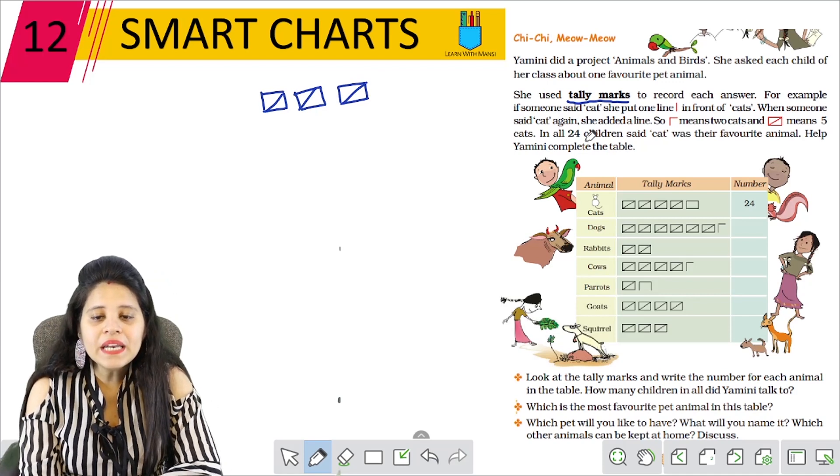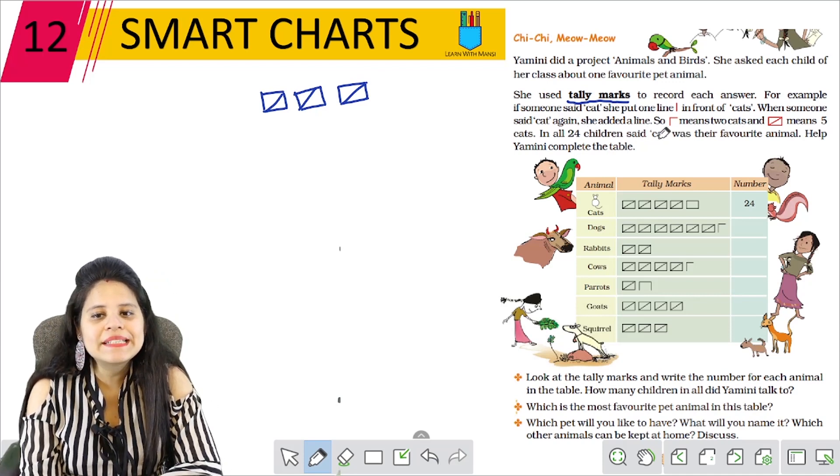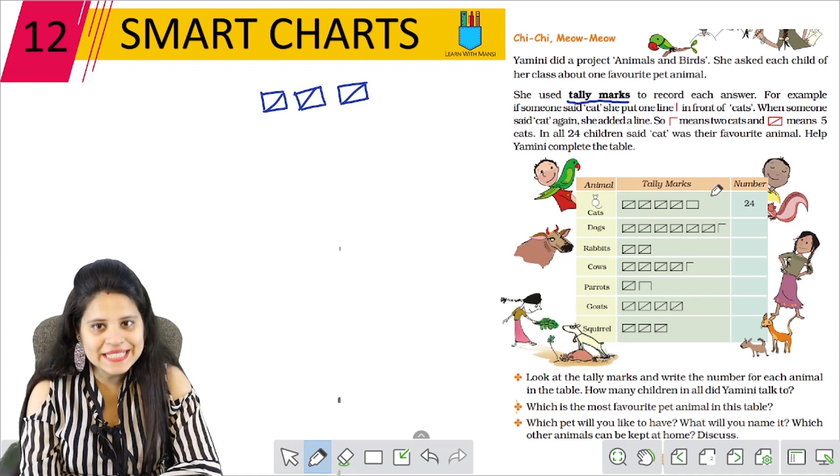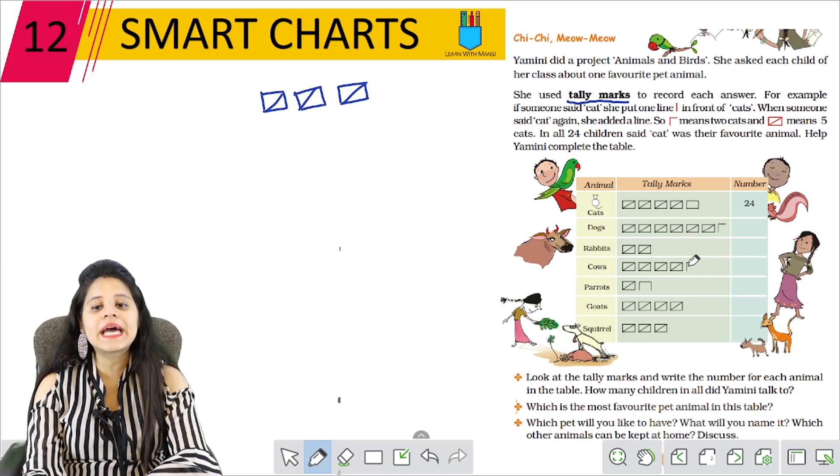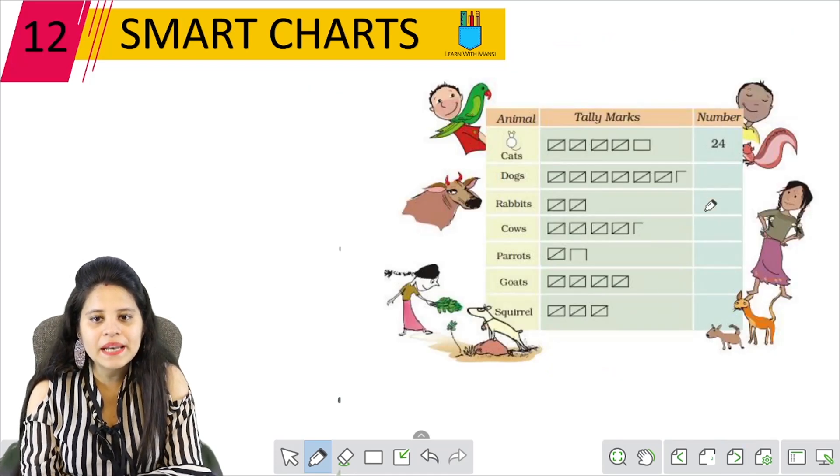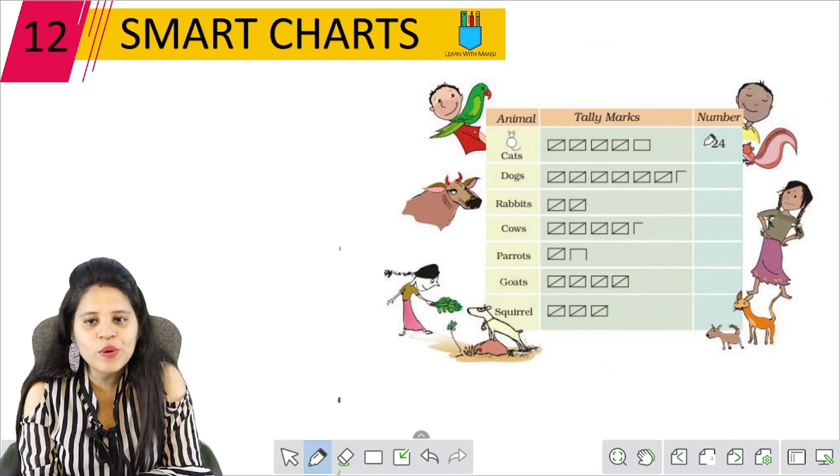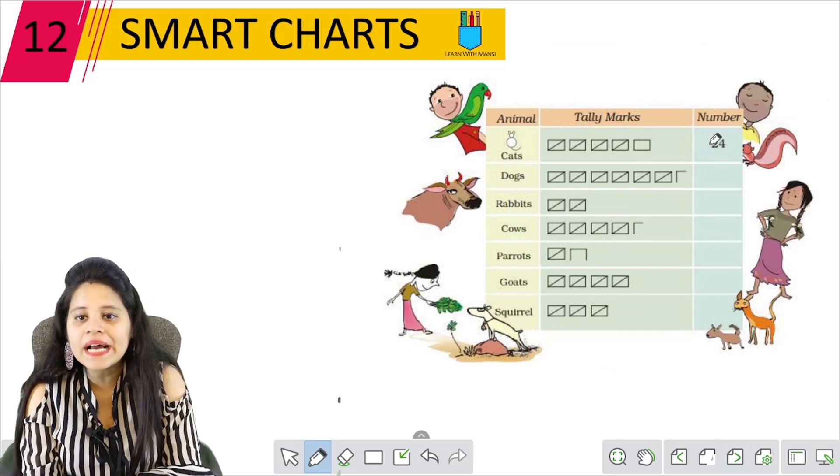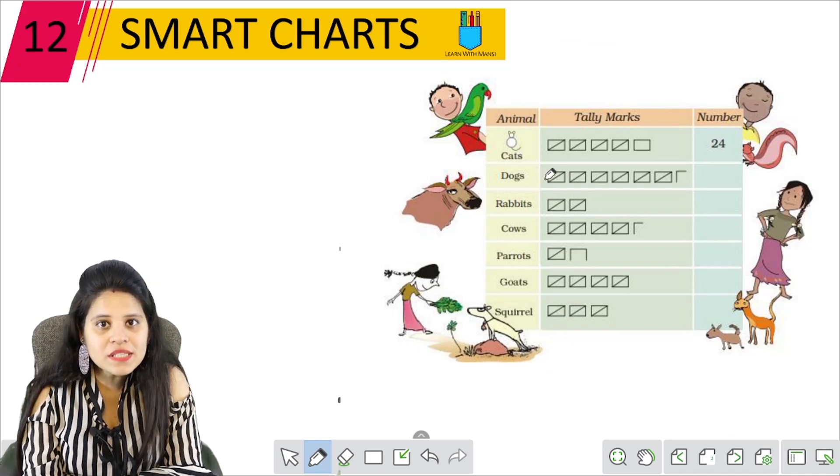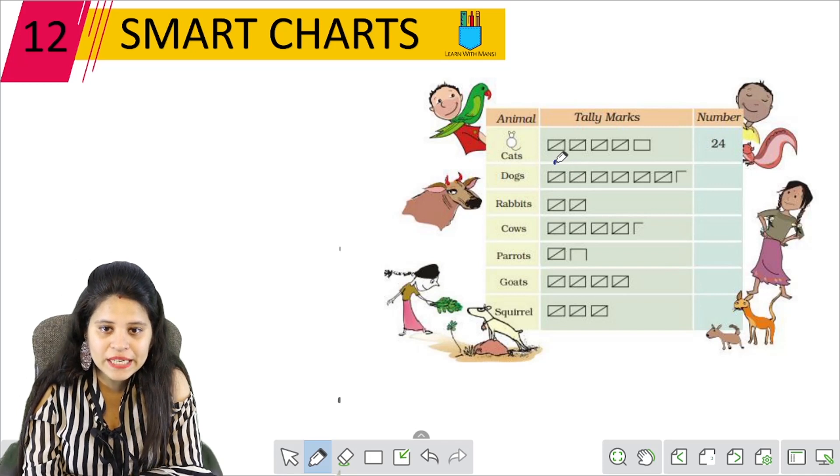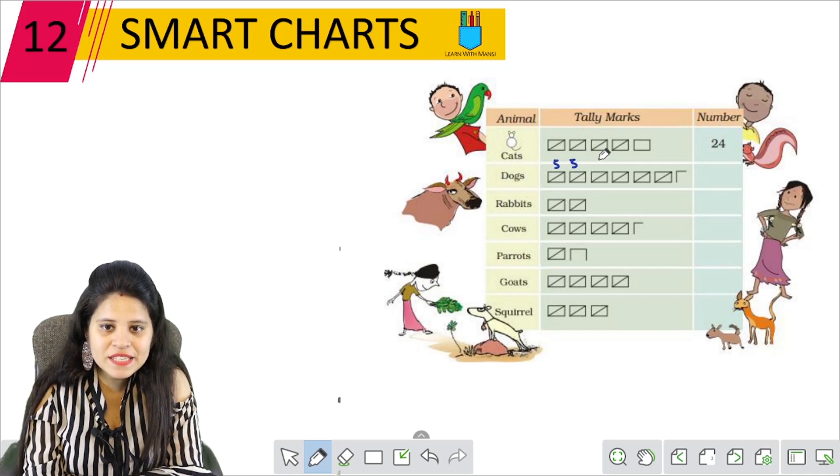Now, in all, 24 children said cat was their favourite animal. Help Yamini complete the table. So here you can see this table. Now, in all of these, we will make this table. We will make everything bigger here. Now, as the 24 children said cat, then put it on the table mark. And then, put the number. Now, here you count the dogs. Five. Again, five. So, we put it here. This is five, then, five.